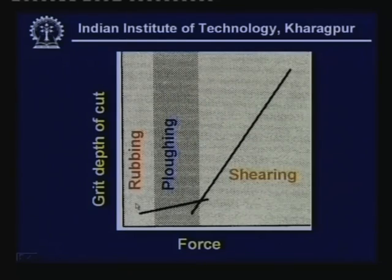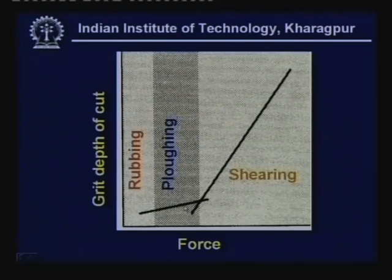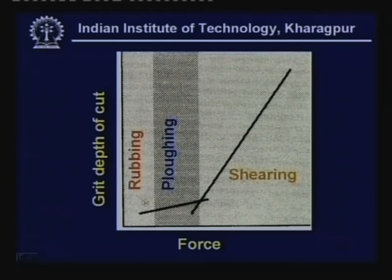A graph of grit depth of cut versus force illustrates rubbing, ploughing, and shearing stages. During rubbing and ploughing, a small increase in grit depth of cut produces a disproportionately high increase in force. But when it goes to the shear mode, the force increase with increasing grit depth of cut is not as high. This explains why specific energy or force is quite high when working at a lower grit depth of cut.